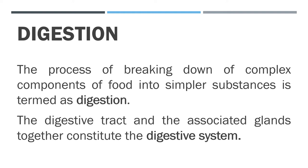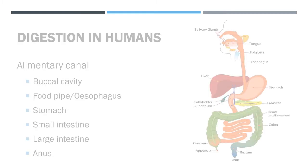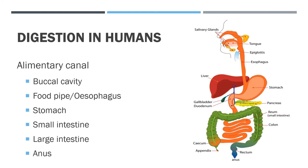The digestive tract and the associated glands together constitute the digestive system. We take in food through the mouth, digest and utilize it. The unused parts of the food are defecated. The food passes through the continuous canal which begins at the buccal cavity and ends at the anus. The canal can be divided into various compartments. These parts together form the alimentary canal or digestive tract. The food components gradually get digested as food travels through the various compartments.